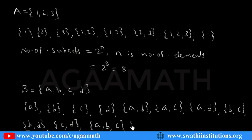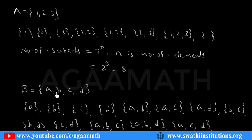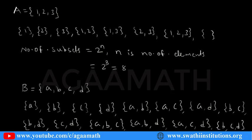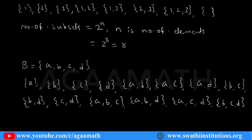Continuing the two-element subsets: {a,b}, {a,d}, {a,c,d}, {b,c}, {b,d}, {c,d}. The three-element subsets: {a,b,d}, {a,c,d}, {b,c,d}. The four-element subset: {a,b,c,d}. And the empty set.